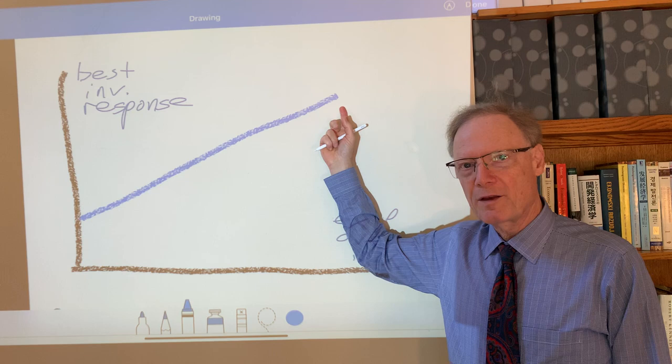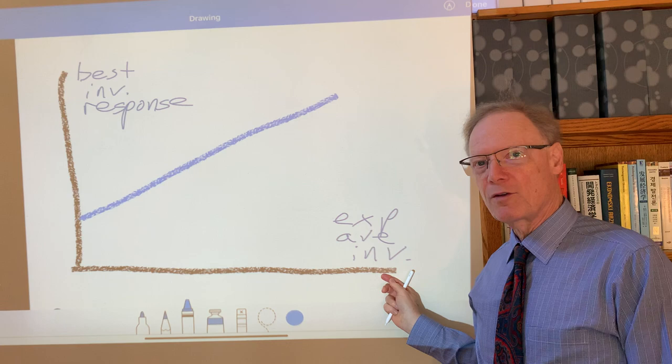When there's complementarity, this relationship is upward sloping, as you see here. That is to say, the more the average expected investment across the economy, the more the firm is going to find its best response in terms of profit maximizing investment level for itself.